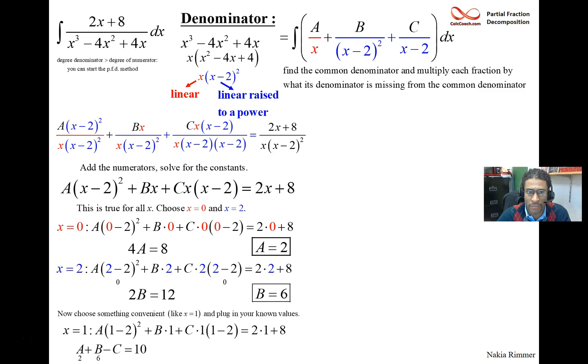And so plug a 1 in, and what you end up with is A plus B minus C is equal to 10. But you know that A is 2. You know that B is 6. So together they are 8. And you'll get that C must be then a negative 2 if you do the algebra right.